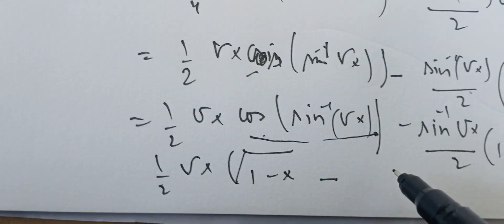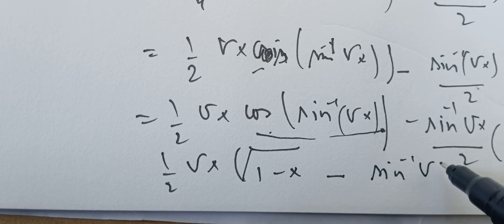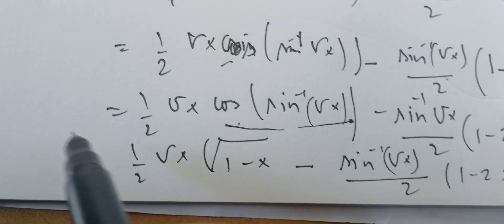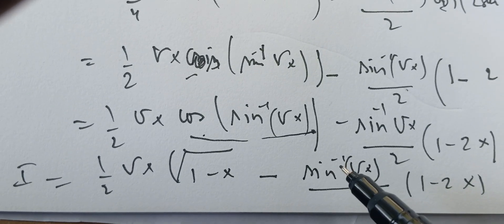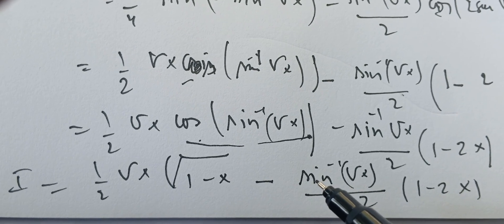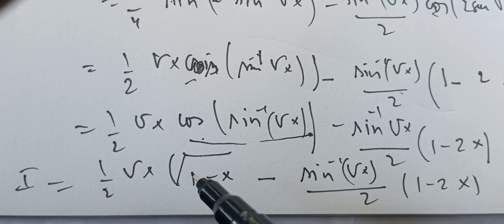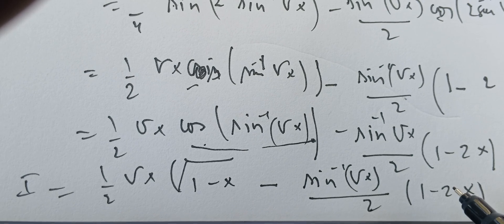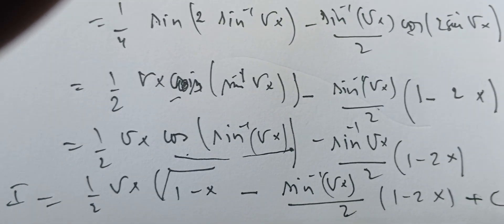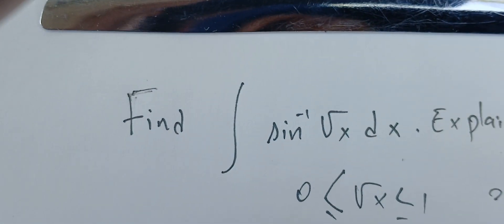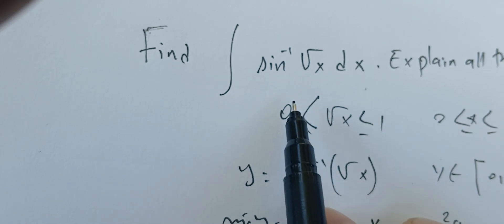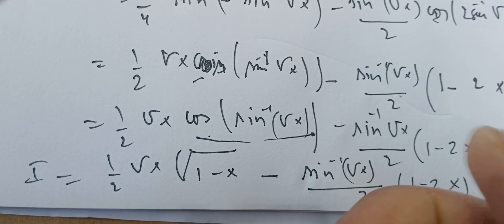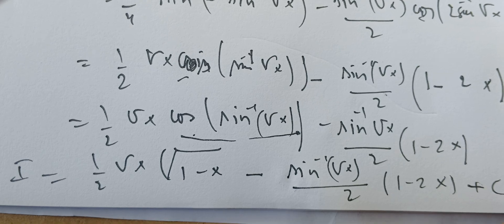Putting it all together, the final answer is: I = (1/2)√x·√(1-x) - (sin⁻¹(√x)/2)·(1-2x) + C. This is the primitive we were looking for. We used many techniques: domain analysis, substitution, tabular integration by parts, and back-substitution with simplification. If you see any errors, please let us know — like, share, and subscribe. Thank you.